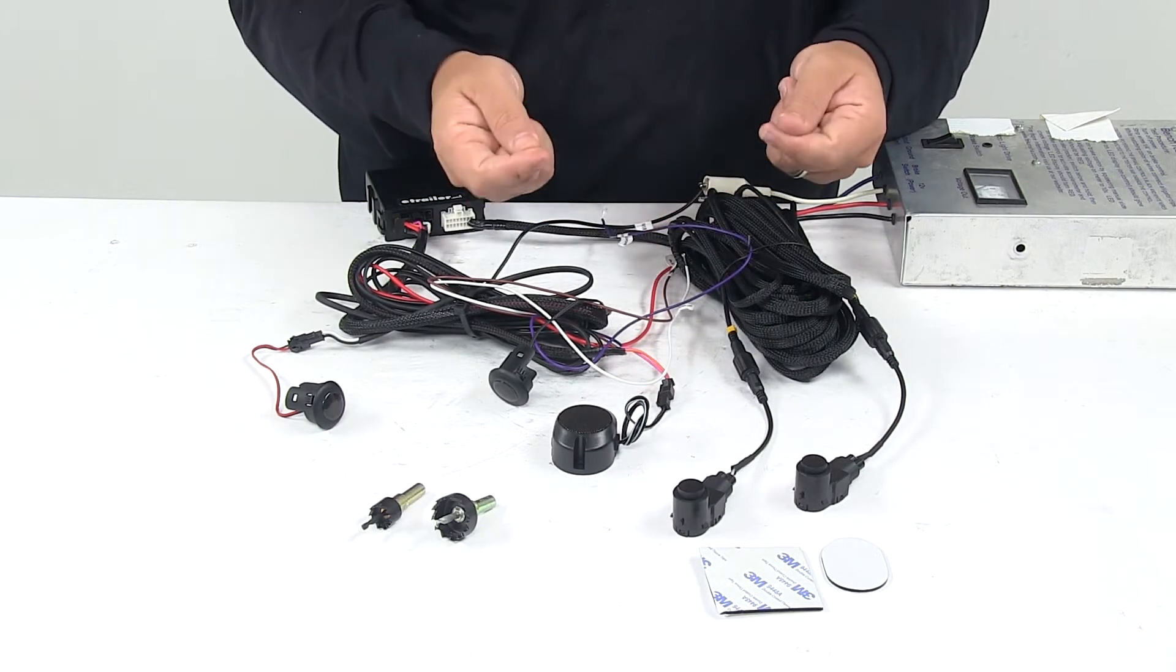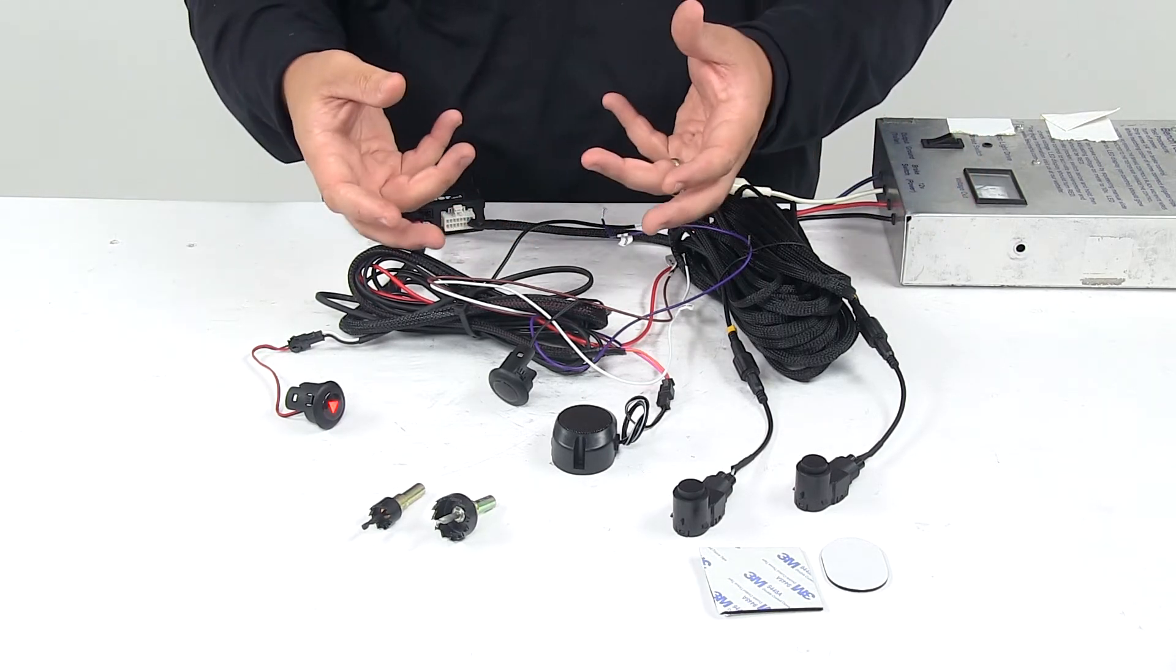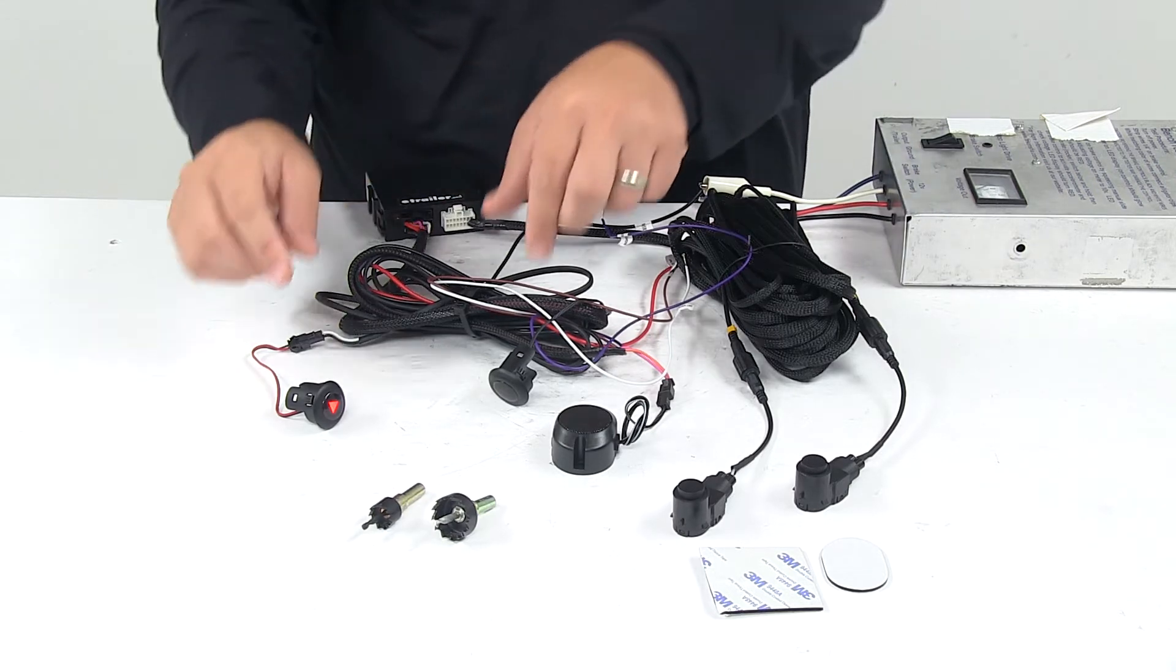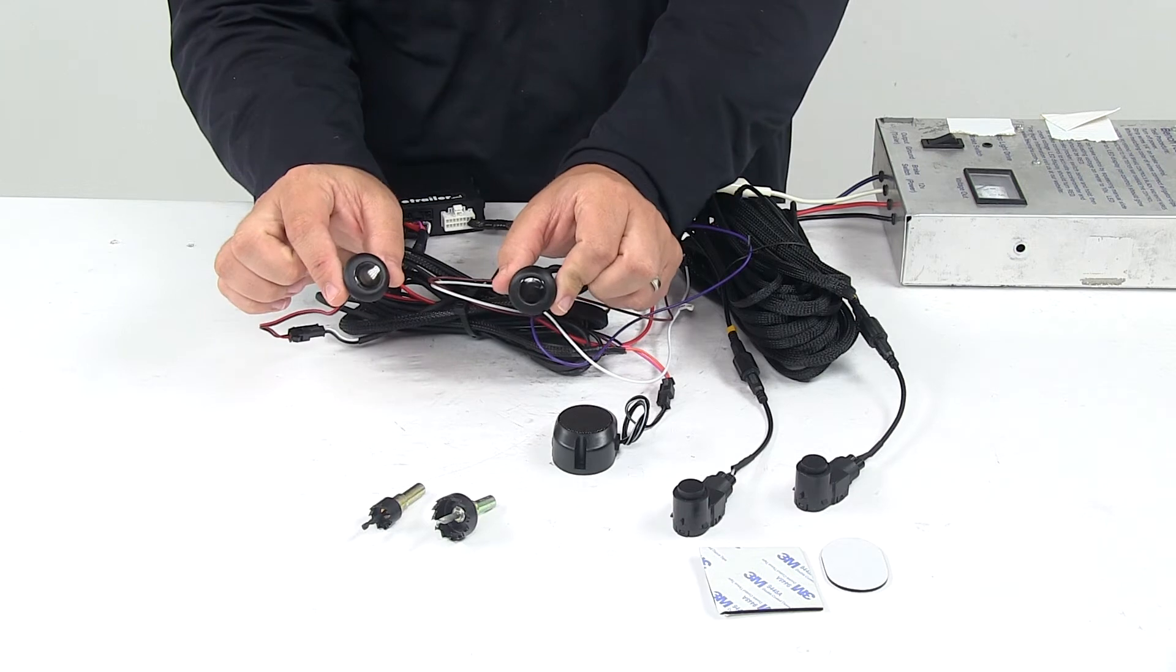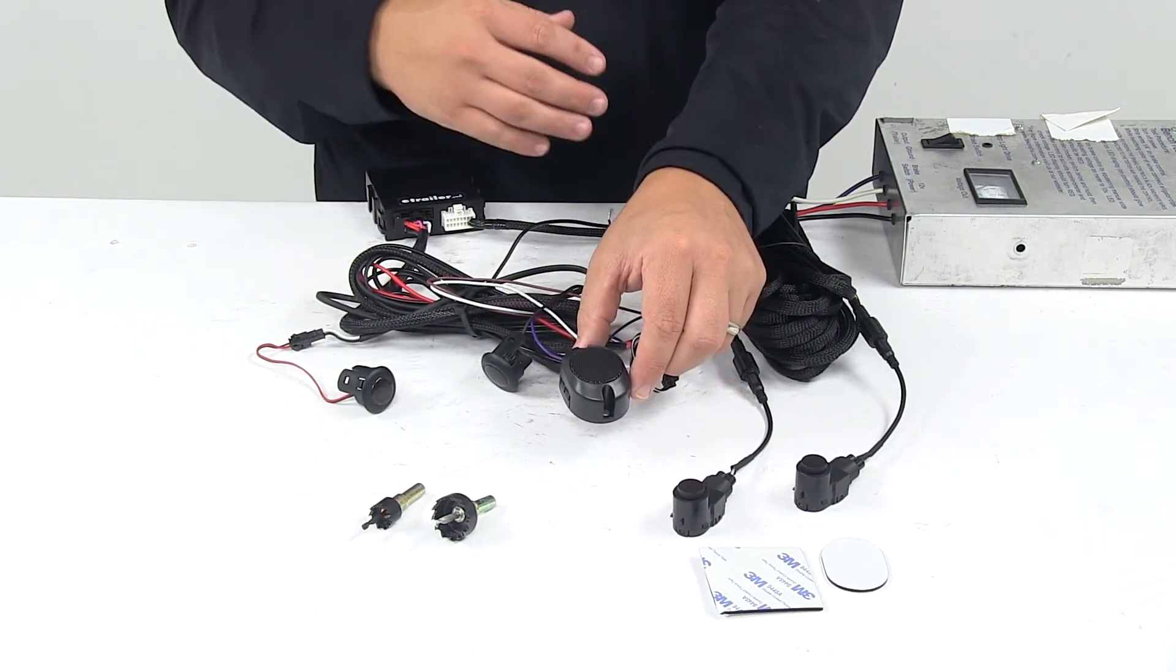So the sensors detect things that are in your blind spots, sends that alert through the system and you have visual and audio alerts. There will always be visual alerts with these right here but the audio warning will only trigger when your turn signals are on.